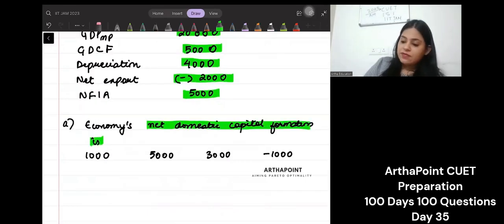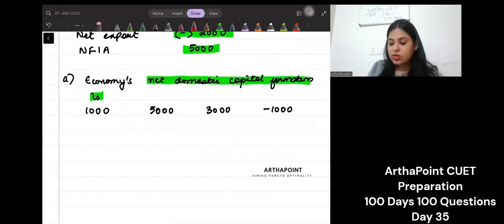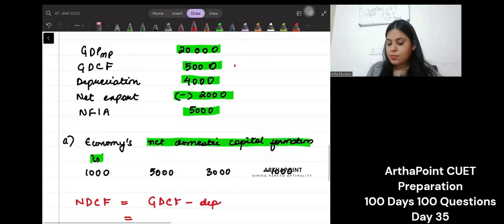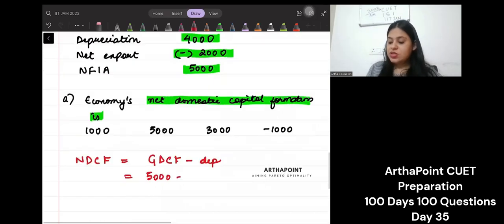Let us have a look. Very simple. Net domestic capital formation can be written as gross domestic capital formation minus depreciation. Gross domestic capital formation is given to us 5,000 and depreciation is 4,000. So answer to this question will be 1,000.